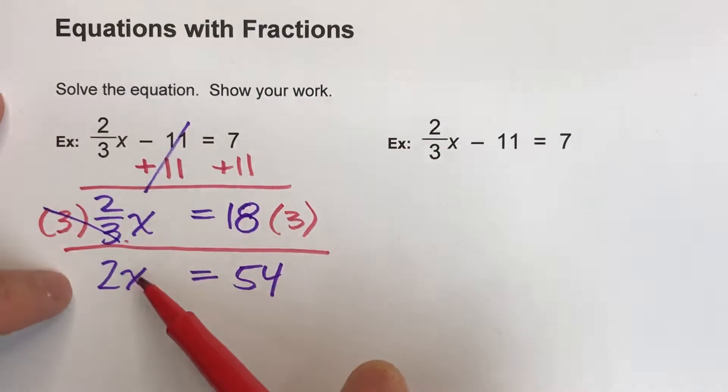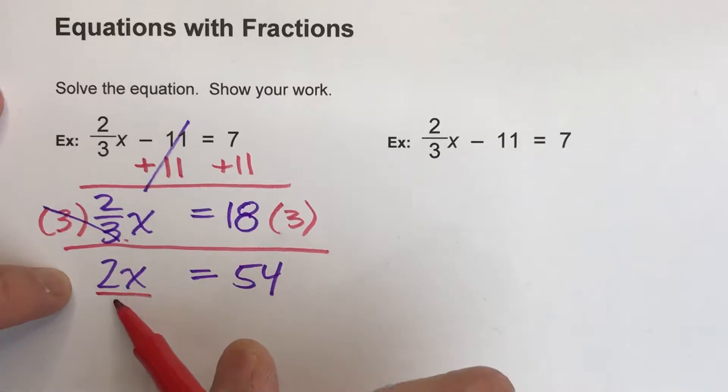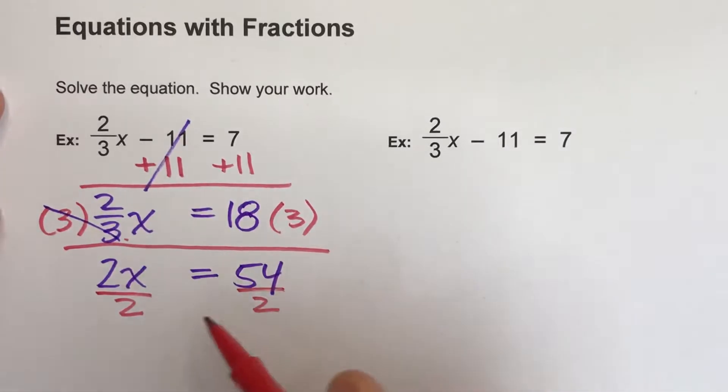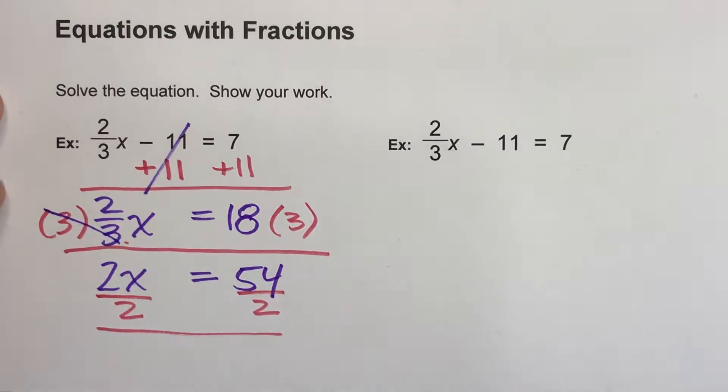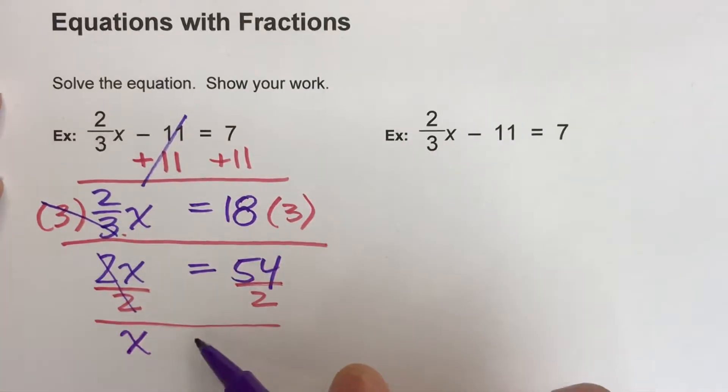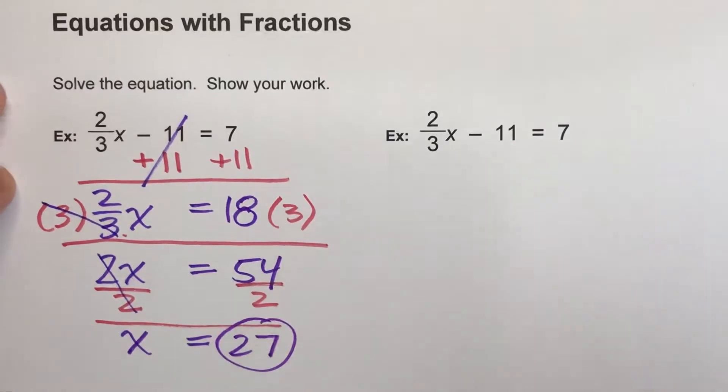And then for my last step, to undo the 2, I'm going to divide both sides by 2. And when I do that, the 2s undo each other. x equals 54 divided by 2 is 27, and there's my answer.